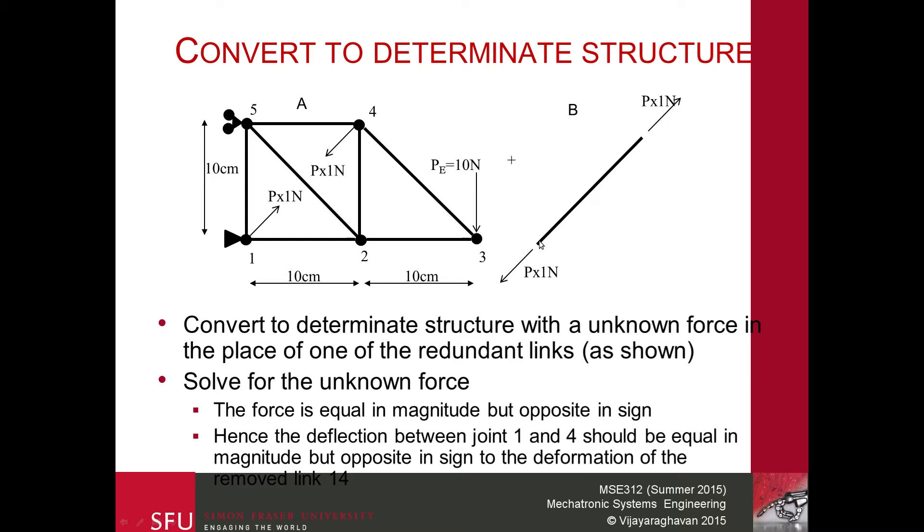If we can make sure that the force we need to apply on this link and the force that we're applying on this or between these two joints are equal in magnitude and we're able to make sure that the deformation, the relative deformation between these two points and the deformation of the structure B is equal, then we can ensure that when we drop in place, the rest of the structure, for instance joint 3, the support wouldn't experience any change and what you've done is effectively solve for the redundant structure.